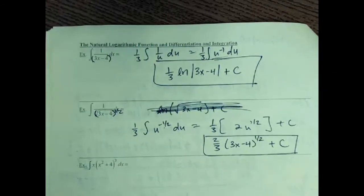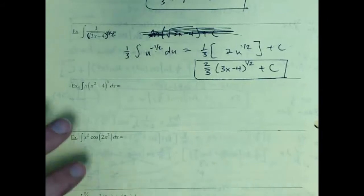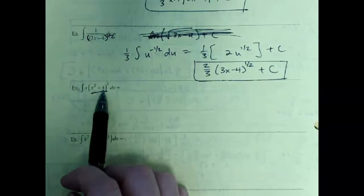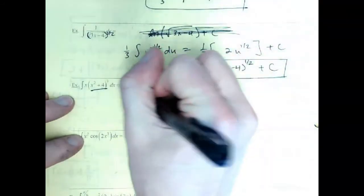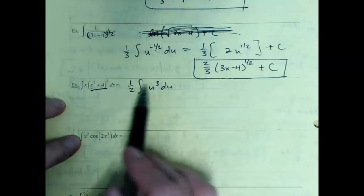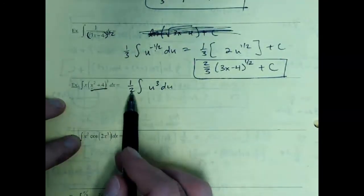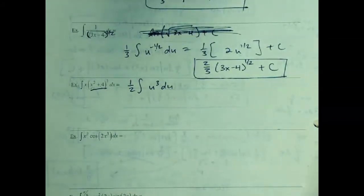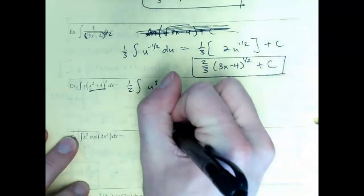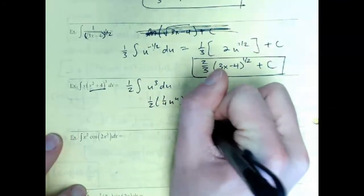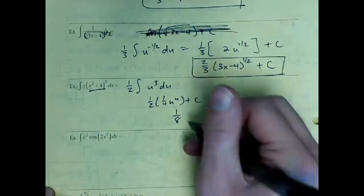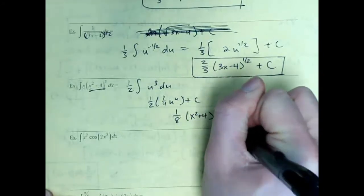Practice examples — trying to do them without writing full scratch work. First: integrate x(x²+4)³. Set u = x²+4. Derivative is 2x dx; we have x but not the 2, so one-half kicks out. We get (1/2) integral of u³ du = (1/2)·(u⁴/4) = (1/8)(x²+4)⁴ + C.